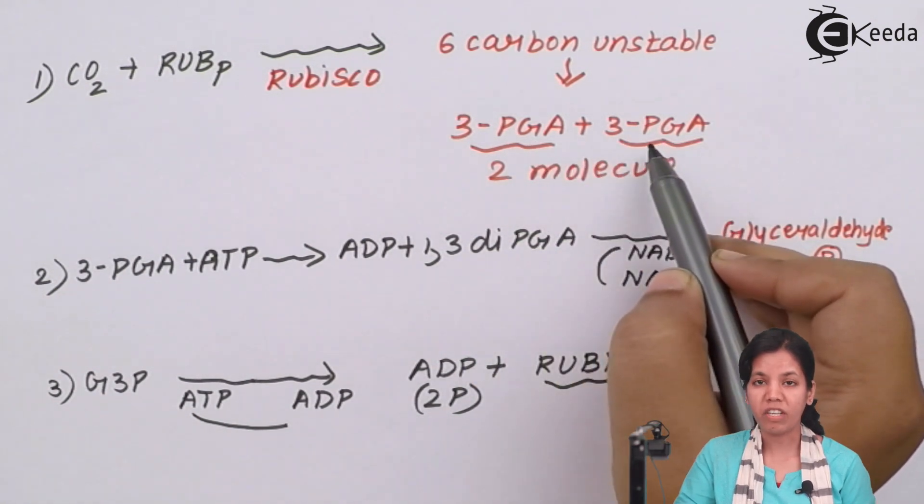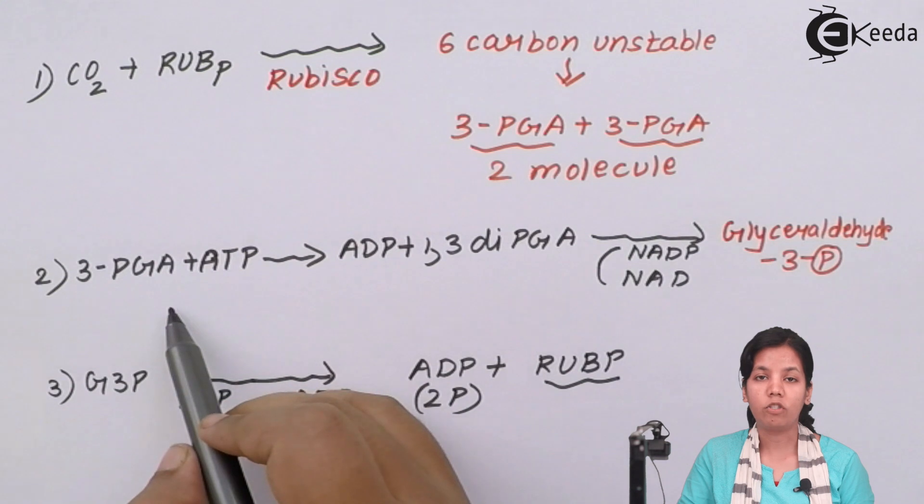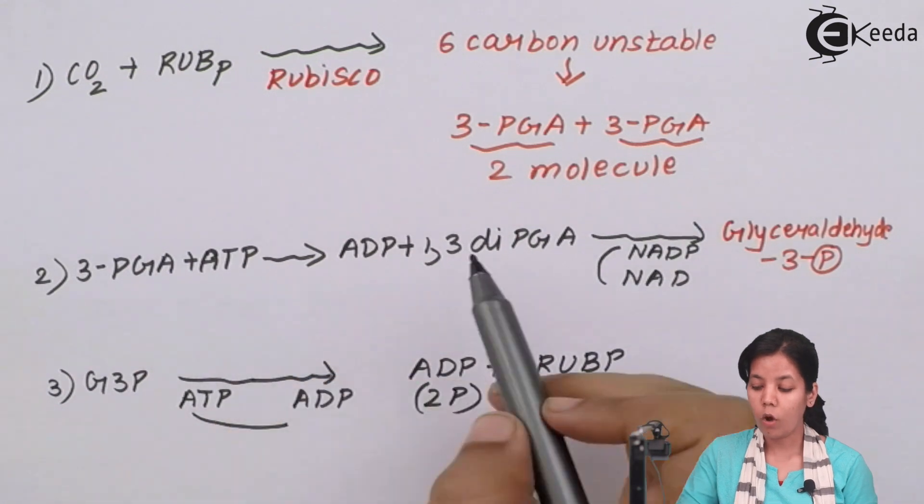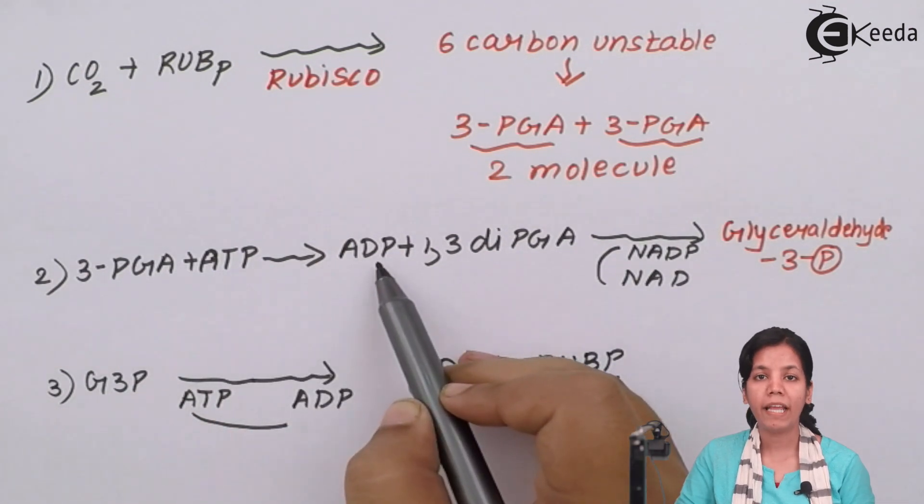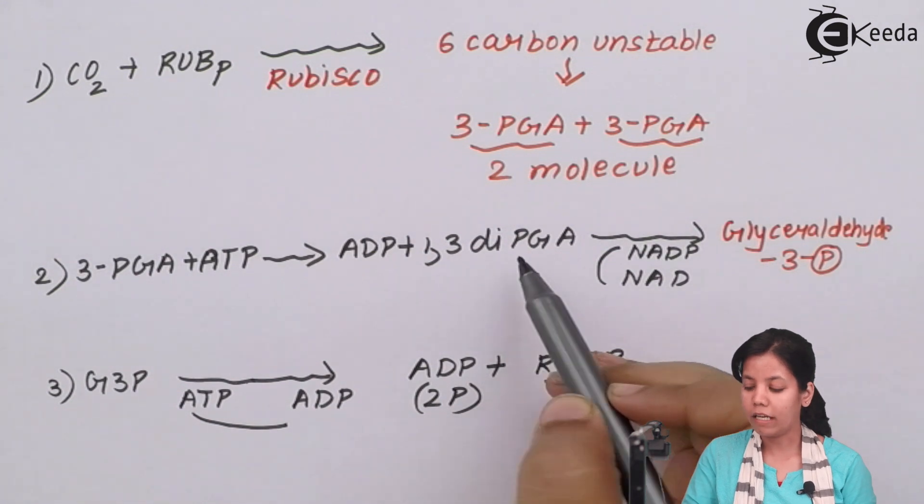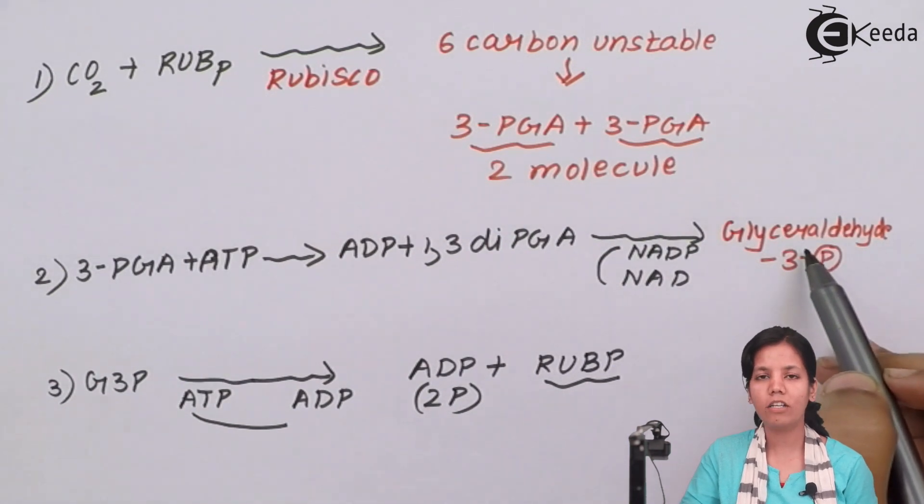When two molecules of 3-PGA are formed the next type of reaction takes place which is reduction. We all know that during the light reaction of photosynthesis ATP and NADP are formed and this ATP and NADP are nothing but light energy molecules. So your 3-PGA in the presence of ATP forms 1,3 dipGA and ATP is reduced to ADP. We all know ATP is adenosine triphosphate from that if we remove one phosphate we get ADP. 1,3 dipGA in the presence of NADP when it gets reduced form glyceraldehyde 3-phosphate or you can say G3P.